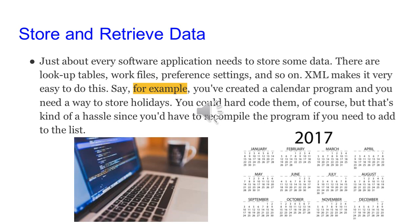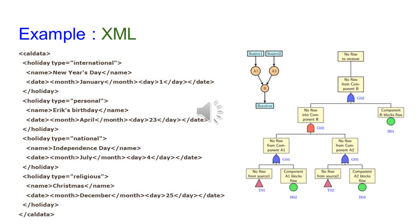Let's look at a simple example to create XML. We are creating a calendar program and we need to store holidays. This is the XML code to create the calendar program and store the holidays. The first entry mentions holiday type as international.